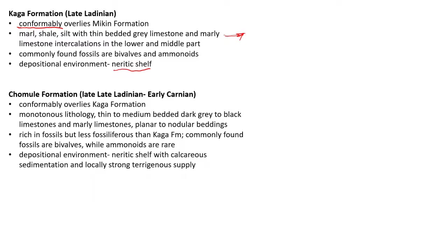The Komule formation — late Ladinian to early Carnian — also conformably overlies the Kaga formation. It has a monotonous lithology of thin to medium bedded, dark grey to black limestones and marly limestones. Though fossiliferous, it has fewer fossils than the Kaga formation; bivalves are common while ammonoids are rare. The depositional environment is the neritic shelf with calcareous sedimentation and strong terrigenous input.